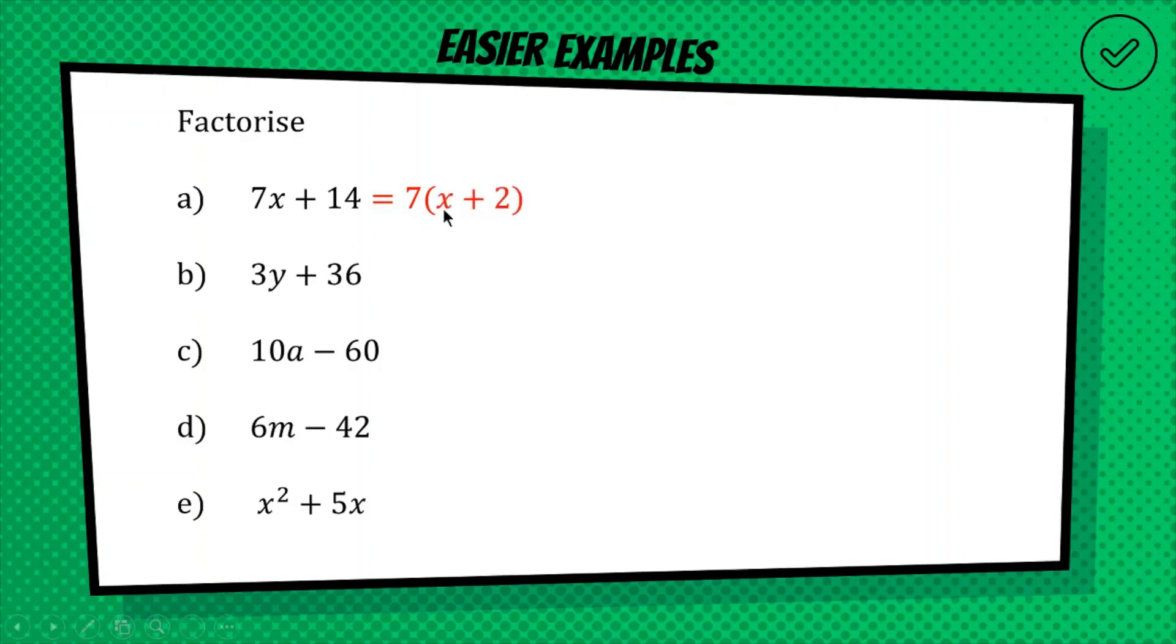Okay, so our answer is 7, outside of x plus 2, and if you're not sure at first, these questions are very easy to check, because you can just expand your answer, and see if you get back where you started. So 7 times x, 7x, 7 times plus 2, plus 14, it works.